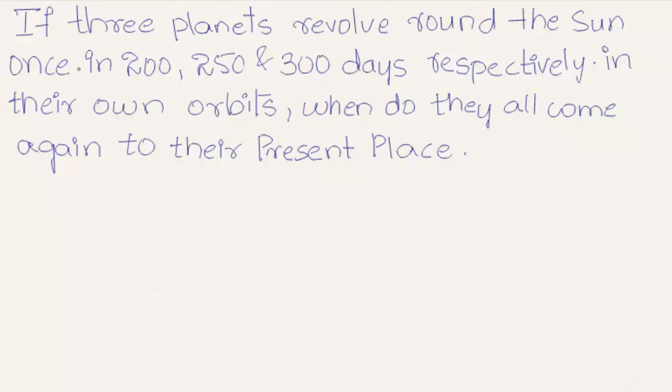Here the given example is: if three planets revolve round the sun once in 200, 250 and 300 days respectively in their own orbits, when do they all come again to their present place?